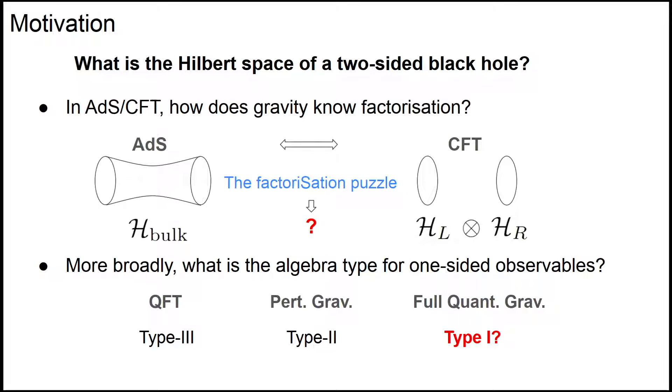If we have AdS/CFT, the CFT can give us a reference answer: the bulk Hilbert space should be factorized as the left part and the right part. But from the bulk point of view, from the gravity point of view, this factorization is not obvious at all because we have a connected geometry. This is one version of the so-called factorization puzzle, basically asking how gravity knows about factorization.